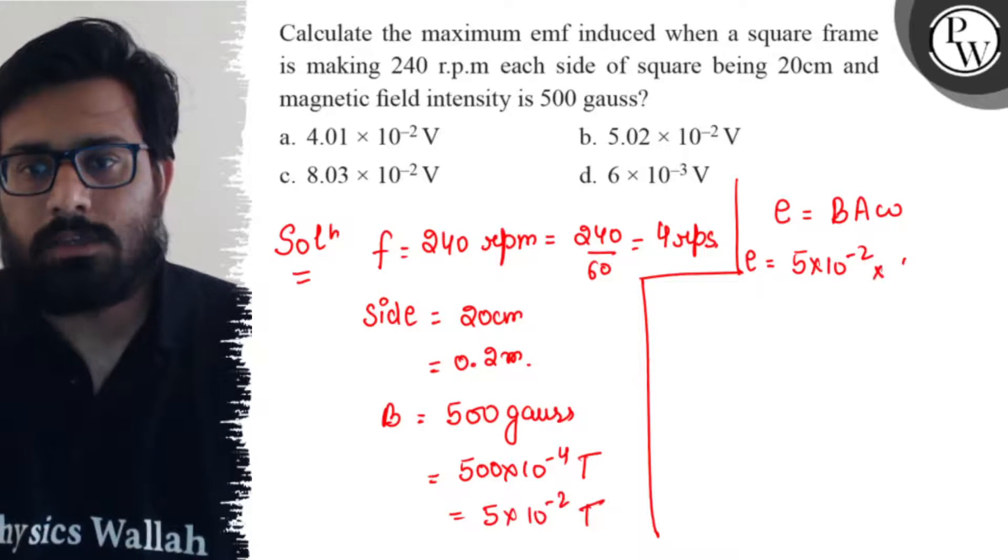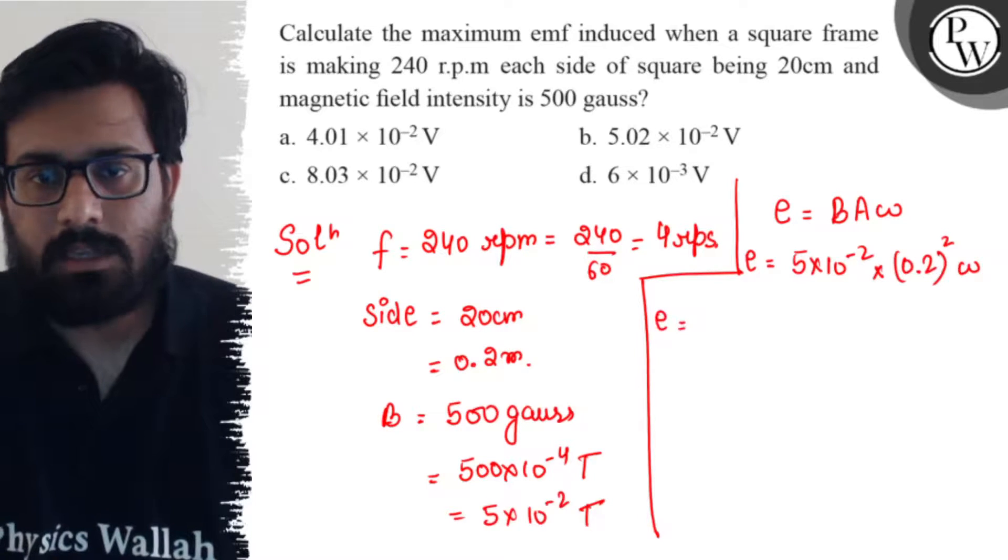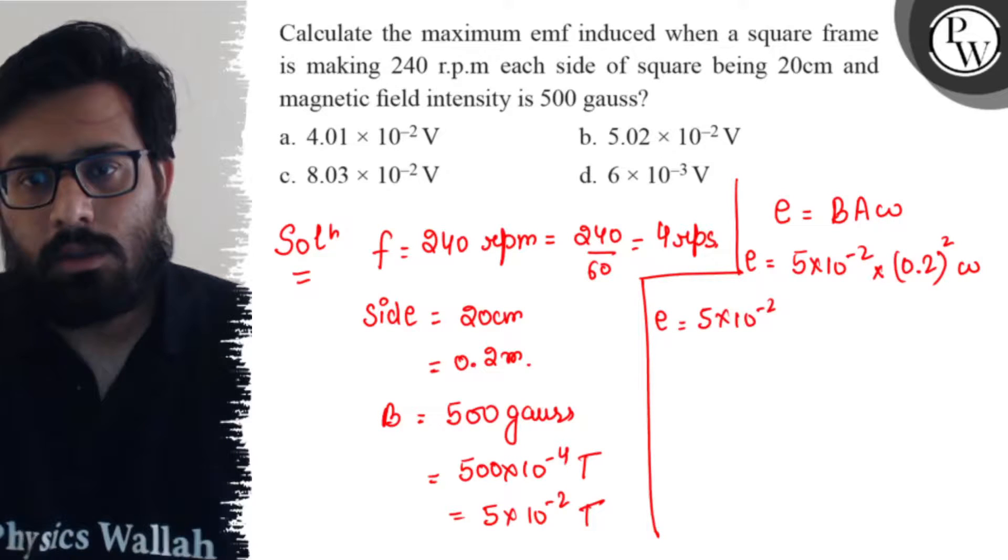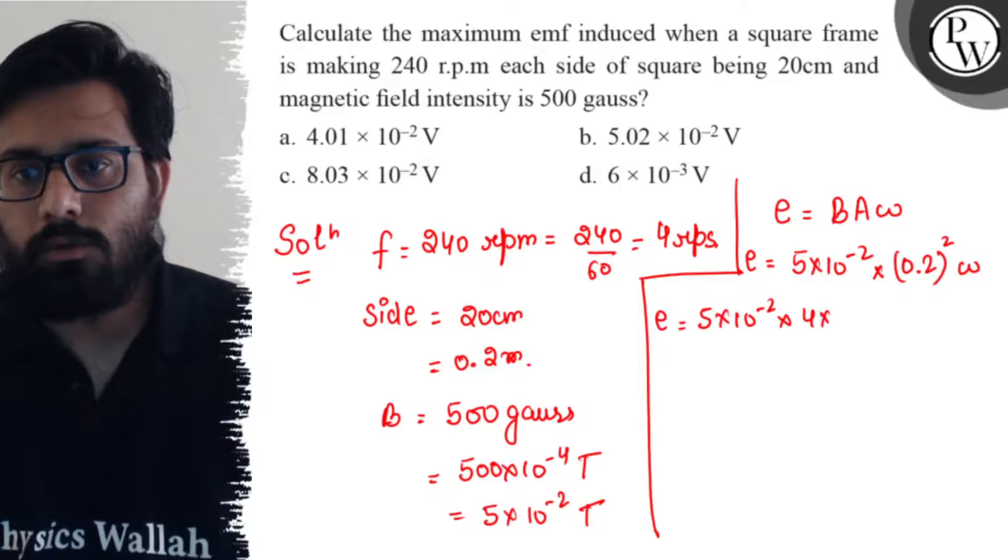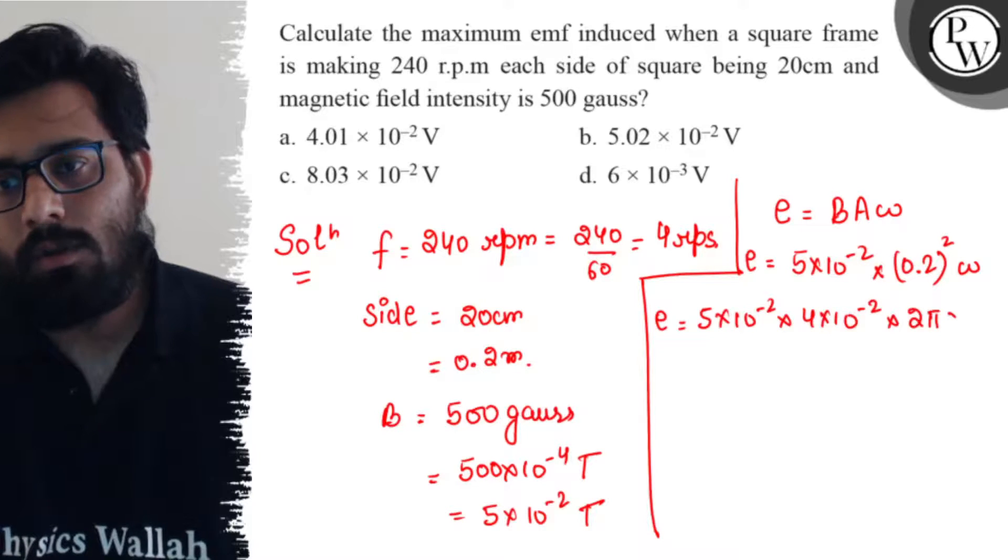Area is 0.2 whole square times omega. So e can be written as 5 × 10^-2 × 4 × 10^-2 is the area times omega, 2π times frequency which is 4.